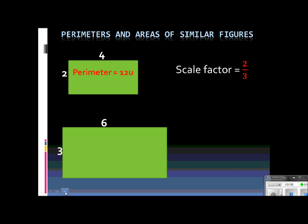Now, we're going to add something. If we were to take the perimeter of the small rectangle, it would be 12 units. 2 plus 4 is 6, and then just double it for the other two sides, the perimeter would be 12. And now let's take a look at the perimeter of the larger rectangle. It would be 18 units. 3 plus 6 is 9, and then just double it for the other two sides. It would be 18 units.